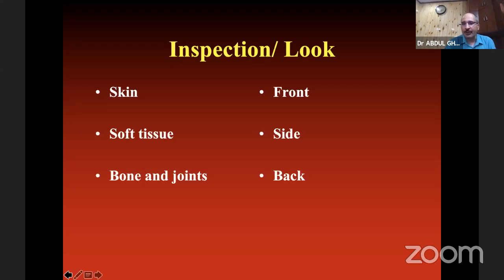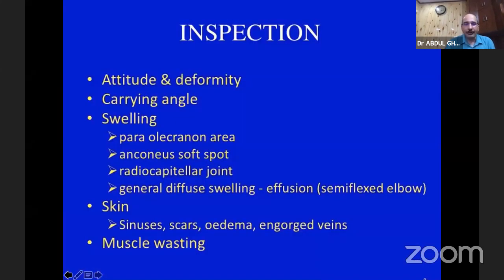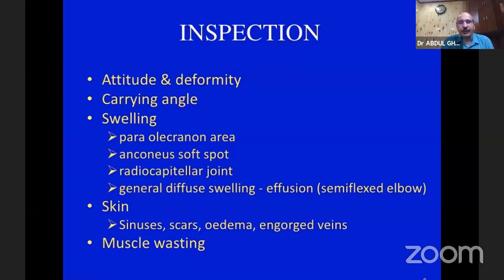Examine the patient from front, side, and back. In skin examination, look for any scar, sinus, edema, or engorged vein. Then soft tissue: whether there is any muscle wasting or swelling. Swelling can be around the peri-olecranon area, the soft spot, in the radiocapital area, or diffuse. Elbows generally tend to be in semi-flexed position. For bones and joint, note attitude and deformity — is there any fixed flexion deformity, any obvious deformity, what is happening to the carrying angle, and is there any limb length discrepancy.